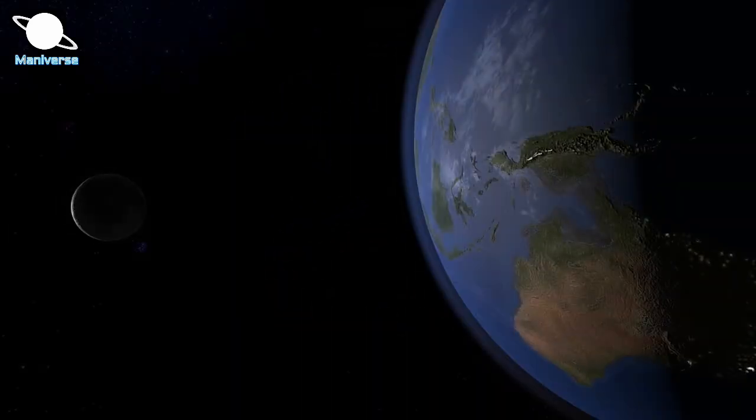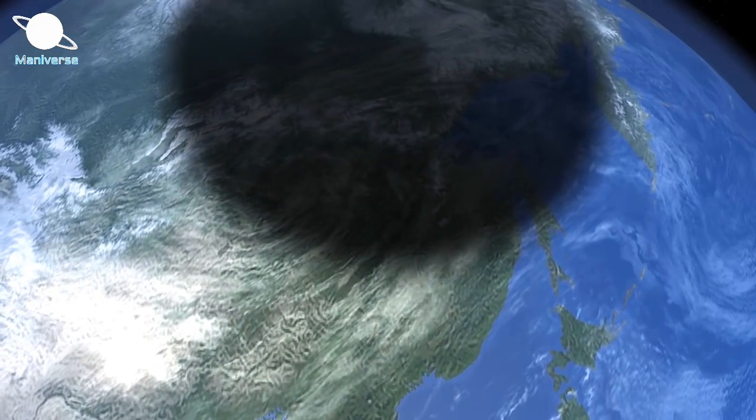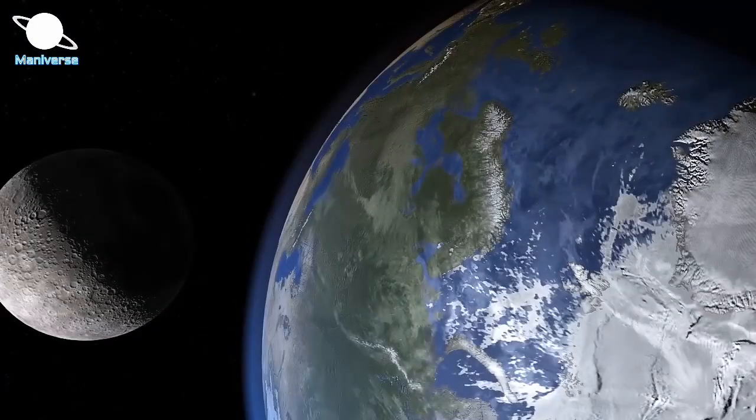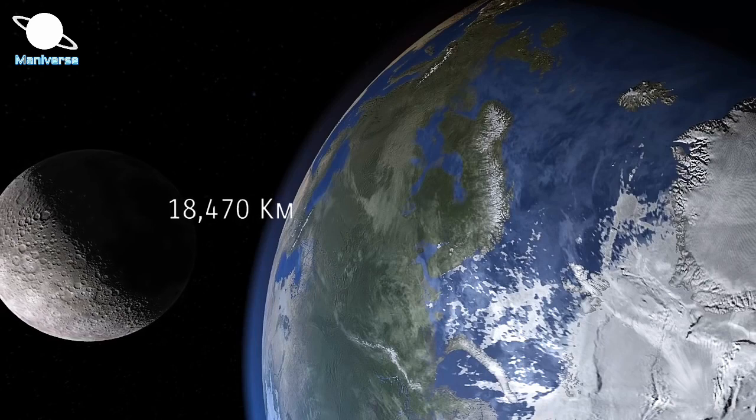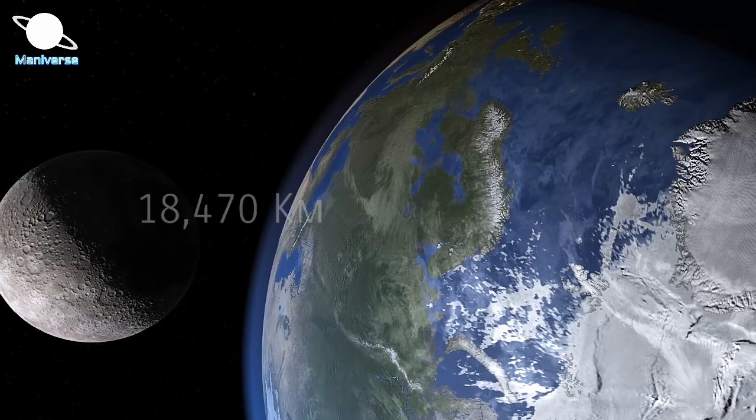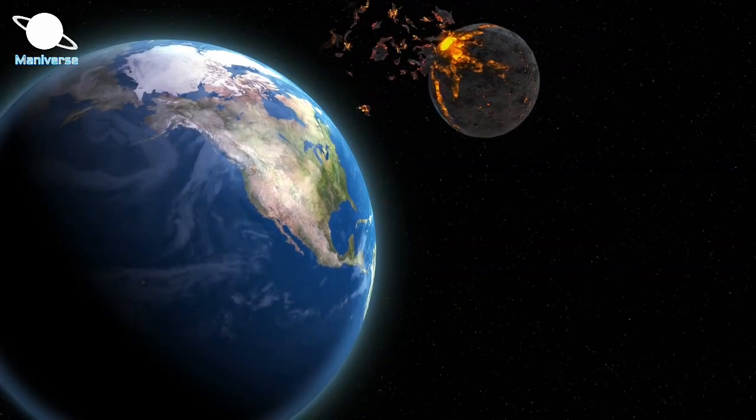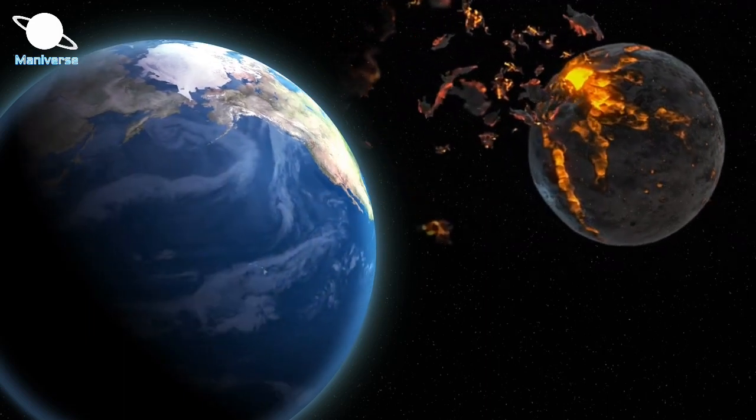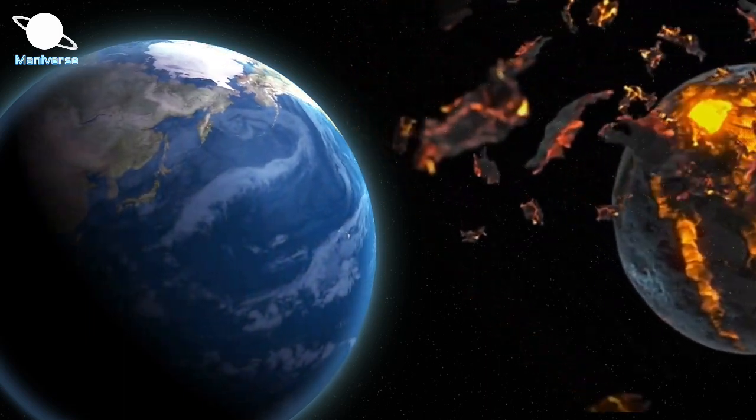Roche Limit's distance depends on the densities of two bodies. The Roche Limit of moon to Earth is 18,470 km. So, if moon will come within 18,470 km, it will tear apart and become a ring of Earth before fall.